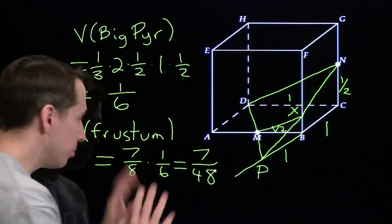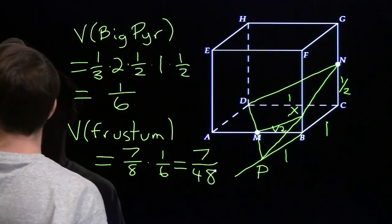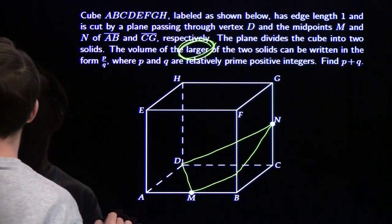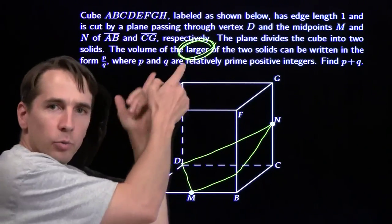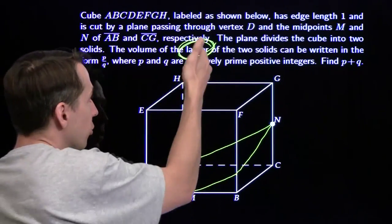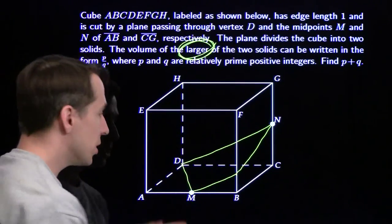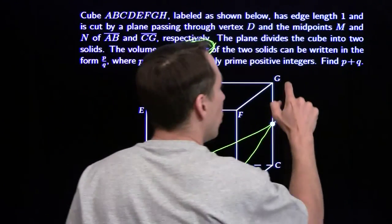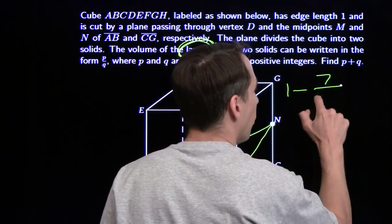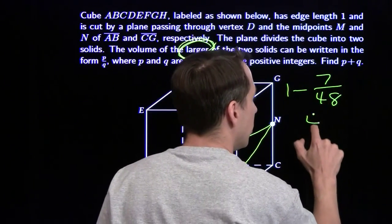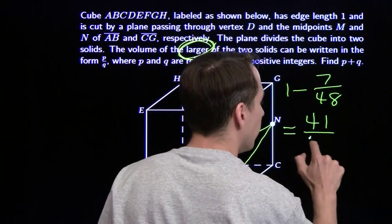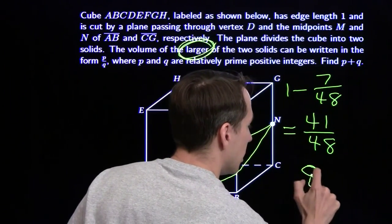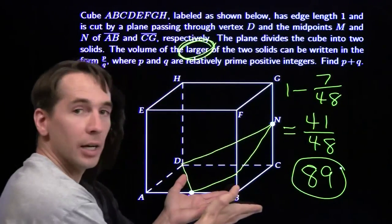Alright? So now it looks like we've got a problem all solved. We just take 7 and add it to the 48. We look back. Oh, wait a second. Wait a second. See? That's why we circled the word in the beginning. So we remember we're going after the larger piece. We found out the frustum has volume 7 48ths. We want the big piece, not the little piece. We need to subtract that from 1. Then we get 41 over 48. So p plus q is 89. And we're done.